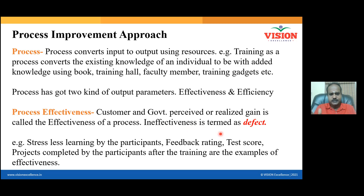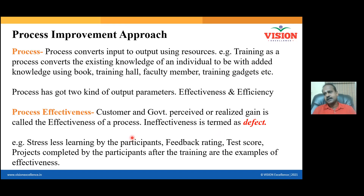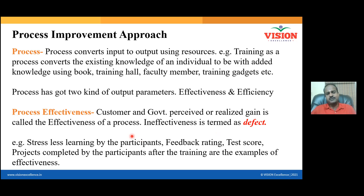For example, the customer expects delivery in two days, but your delivery actually happens in four days — that is also a defect. Any deviation from the expected requirement is a defect. So when you buy a laptop and the laptop performance is not satisfactory, that is an effectiveness issue.